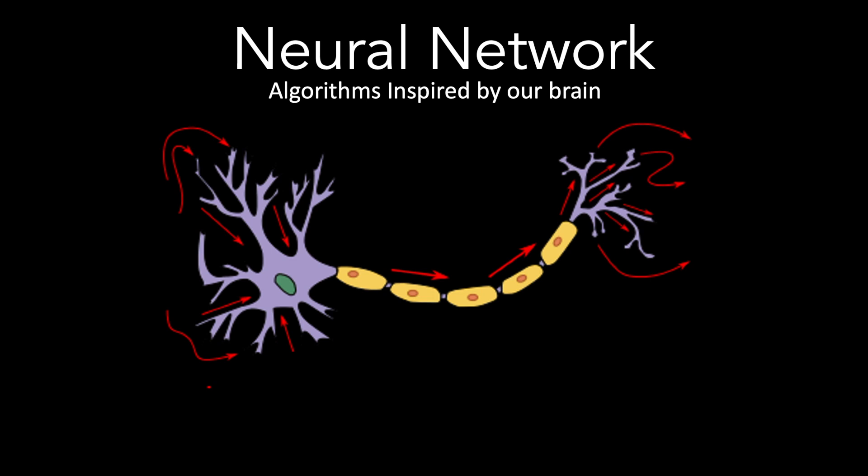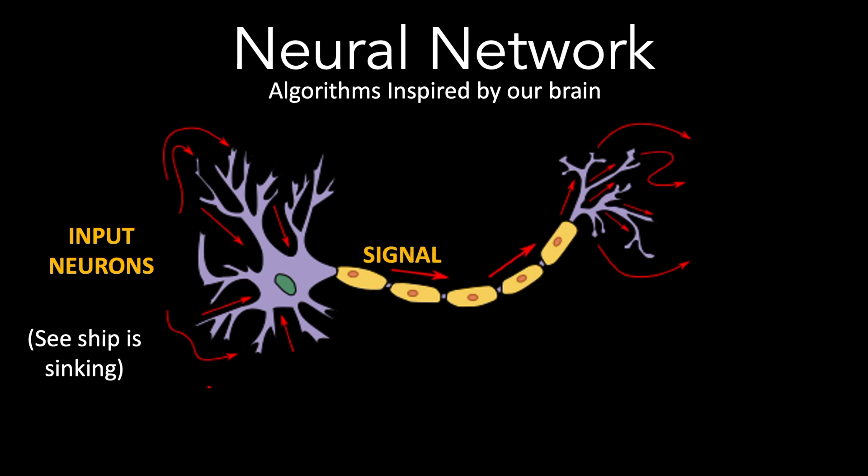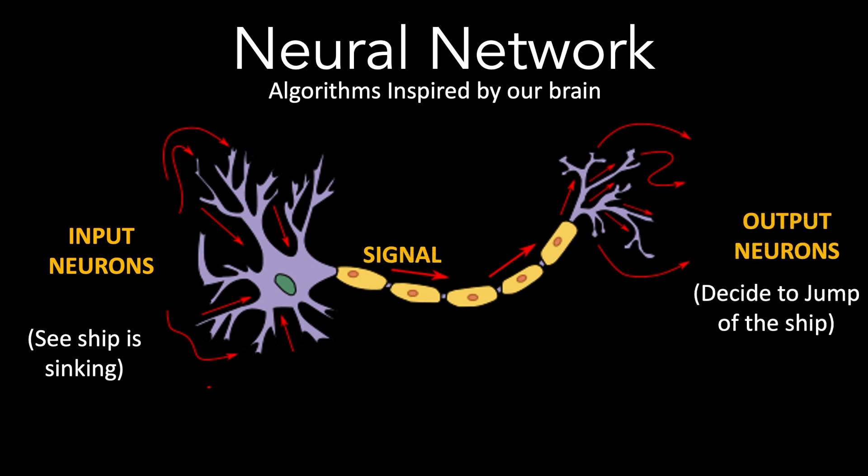Neural network algorithms are inspired by how our brain works. You have the input neurons which receive signals such as seeing a ship is sinking. These signals are then processed and sent to output neurons, which is what our brain decides as an action to take, such as a decision to jump off the ship. How the input is translated into output depends upon the intermediate neurons, and these intermediate neurons decide based on various things such as the perception of the situation, the past experience, the emotions and various other factors. So the intermediate neurons hold the key on how the input and output are connected.